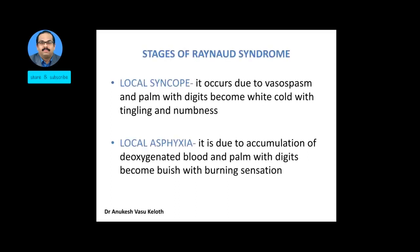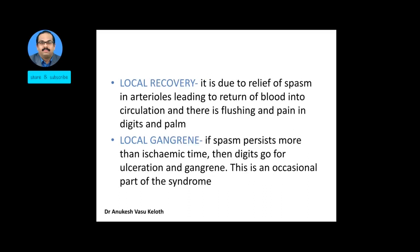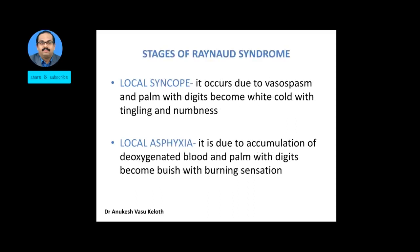There are three stages of Raynaud's phenomenon classically described: local syncope, local asphyxia, and local recovery. A fourth stage, local gangrene, is sometimes mentioned but is not actually part of Raynaud's phenomenon — it occurs only if the condition is not self-limiting. Local syncope occurs due to vasospasm; the palm and digits become white and cold with tingling and numbness. It does not affect the full hand — only the fingers and portions of the palm.